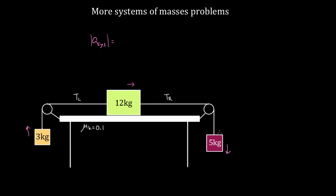If this is just a single object, I don't have to worry about any internal forces. The tensions become internal forces, and those don't make a system accelerate — only external forces do. So all I have to do is find what external forces try to accelerate this system and what forces try to prevent acceleration. I'll call this F external, then divide by the total mass. This is simply Newton's second law as if this were one big object.